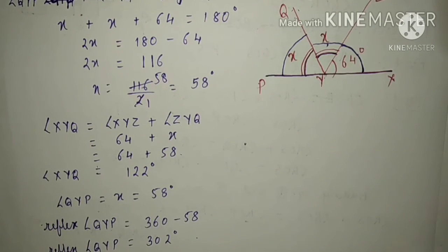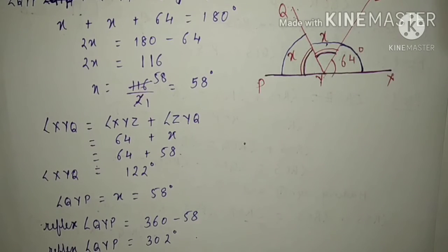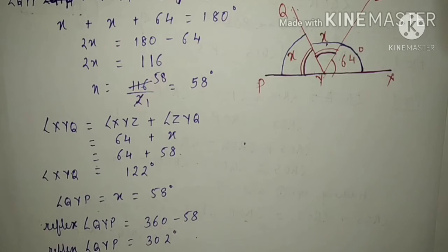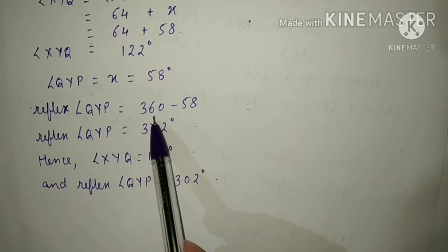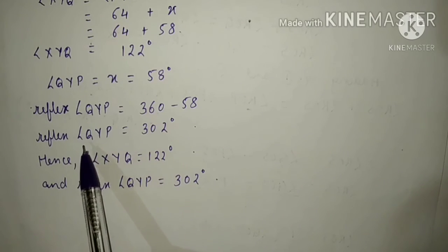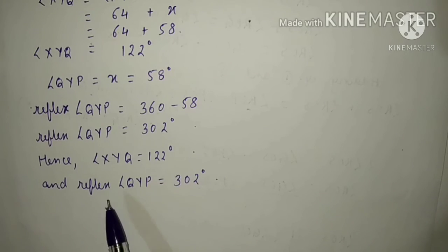Now next we have to find the reflex angle of angle QYP. For this, first we will find angle QYP. Angle QYP is equals to x, and x is equals to 58 degrees, so this is equals to 58 degrees. Now the reflex of angle QYP equals 360 minus 58 degrees, which equals 302 degrees. Hence, angle XYQ is equals to 122 degrees and reflex of angle QYP is equals to 302 degrees.